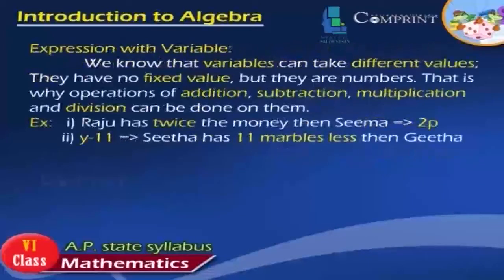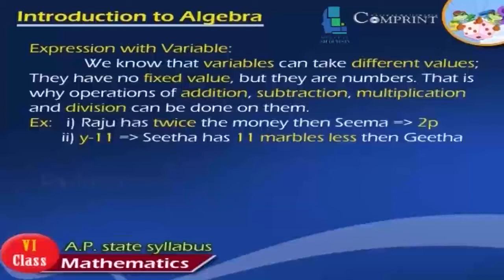Expression with variable. We know that variables can take different values. They have no fixed value, but they are numbers. That is why operations of addition, subtraction, multiplication, and division can be done on them. Example 1: Raju has twice the money than Seema.